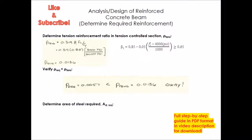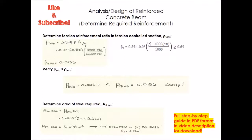Now that you have the required reinforcement ratio, it directly gives you the area of steel required. As = ρ × b × d — the width of the beam times the depth of the rebar from the compression face (not the total beam height, which is a common confusion). Doing the calculation gives As_required = 3.078 in². Through trial and error, four Number 8 bars work as a solution for the bottom reinforcement, providing As = 3.14 in², which exceeds the required 3.078 in².